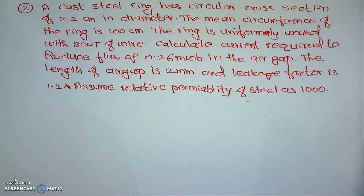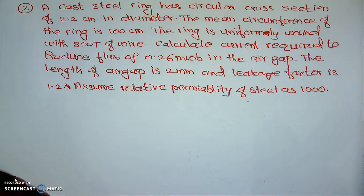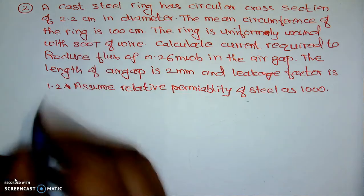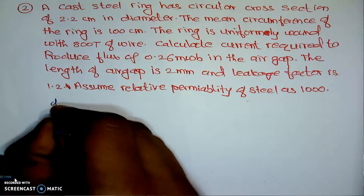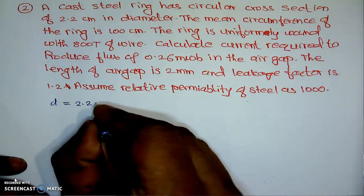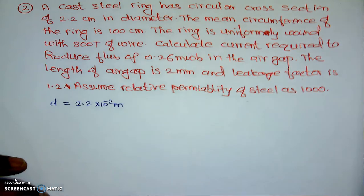Here I will read the problem carefully and sort out the given data. In case of the magnetic circuit, the most important thing is stating the given data in proper dimensions — we have to use proper units. A cast iron ring has a circular cross section of 2.2 cm in diameter.